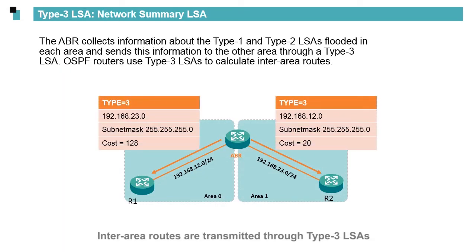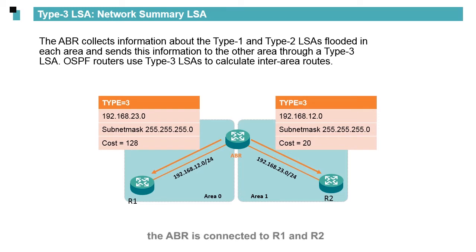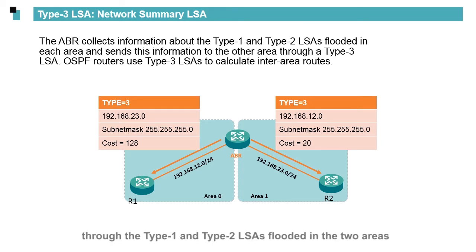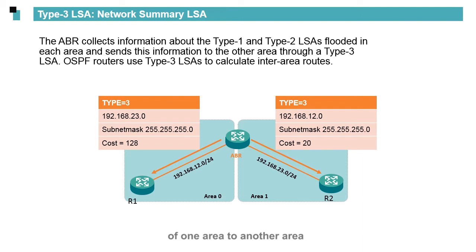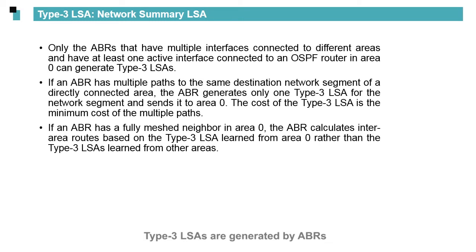Inter-area routes are transmitted through Type 3 LSAs. On the network shown in the figure, the ABR is connected to R1 and R2. The ABR learns the routes in the two areas through the Type 1 and Type 2 LSAs flooded in the two areas. Then, the ABR uses Type 3 LSAs to transmit the routes of one area to another area. Type 3 LSAs are generated by ABRs.